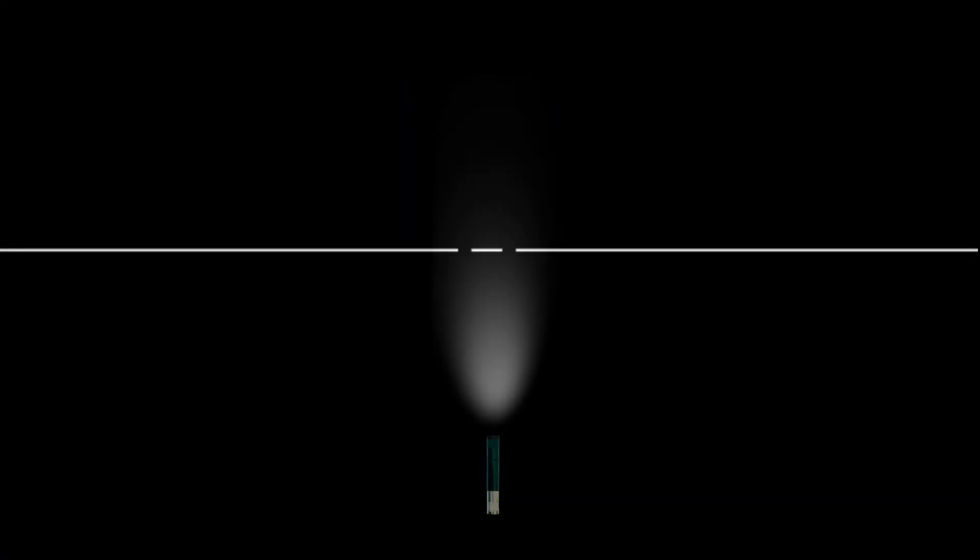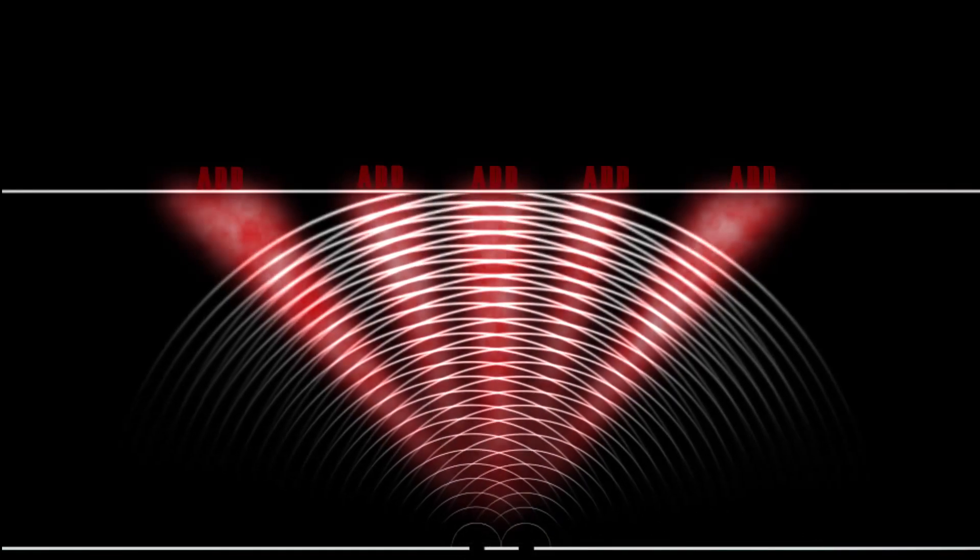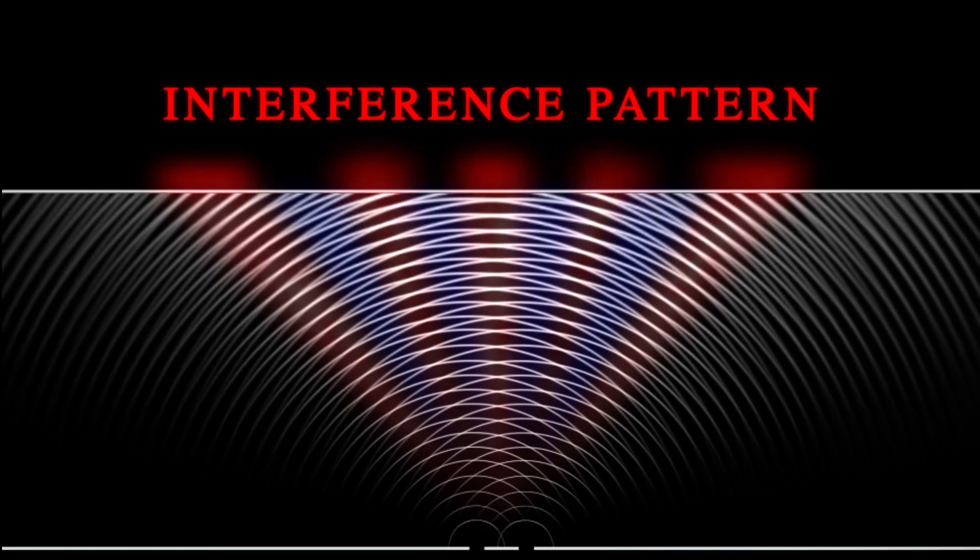In the double slit experiment, we shine the light through two slits. If light were made up of particles, they would land in two neat clusters. If light's made up of waves, things get a little more complicated. This wave splits into two and then these two waves interfere with each other, so they add in some places and subtract in others, making an interference pattern.